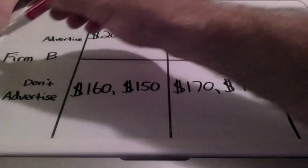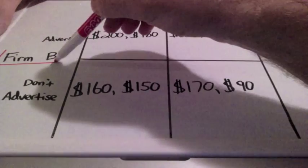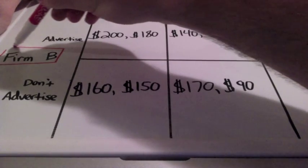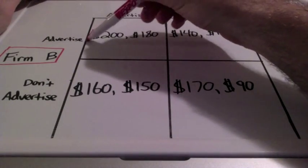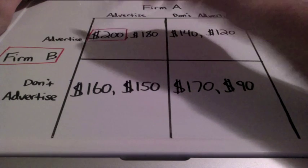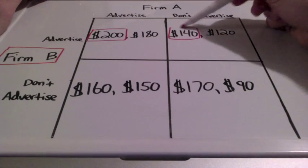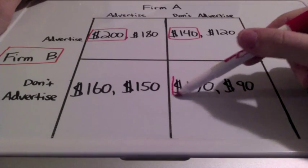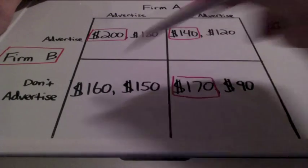To make this easier, we are going to square off in red firm B and all of the numbers that deal with firm B. They're all the numbers to the left.